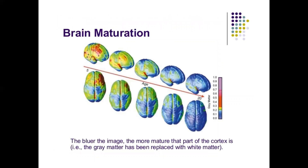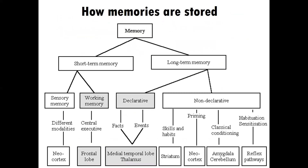We'll learn about brain maturation and talk a lot about gray matter and white matter — what's happening with gray and white matter over time as we age. Then we'll talk about memories and memory consolidation. We'll discuss implicit memory — sometimes called non-declarative memory — and explicit memory, also called declarative memory.